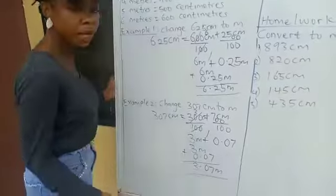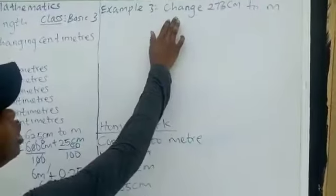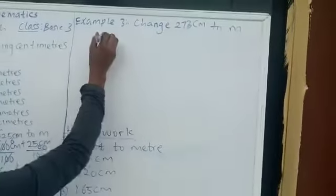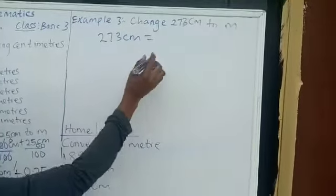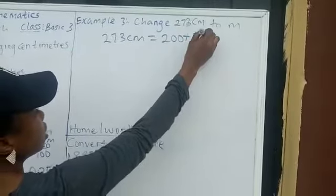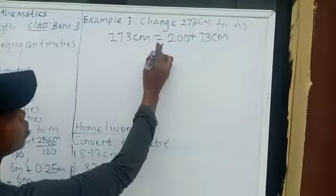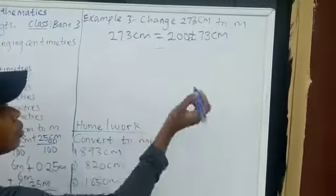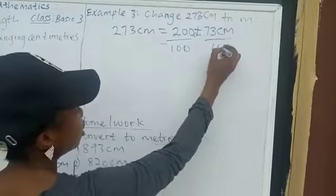The next example: change 273 centimeters to meters. Now we are going to split this: that's 200 plus 73 centimeters. We are to divide by 100. From centimeters to meters, you divide by 100. That's 200 divided by 100, and 73 divided by 100.